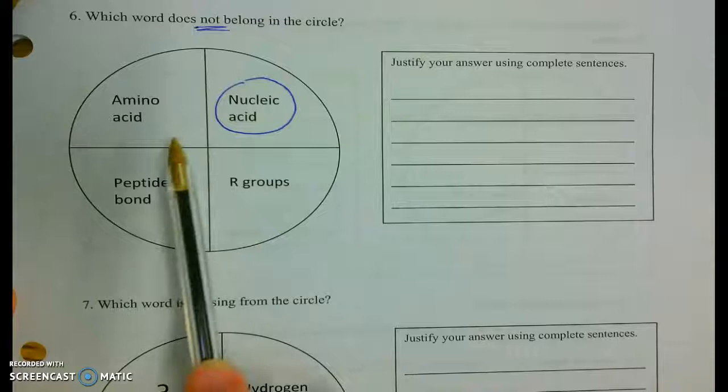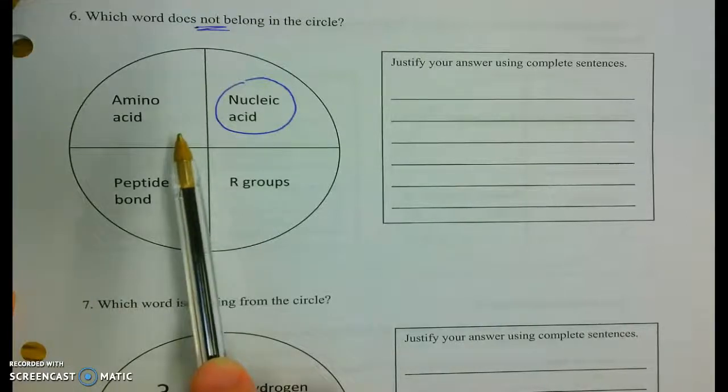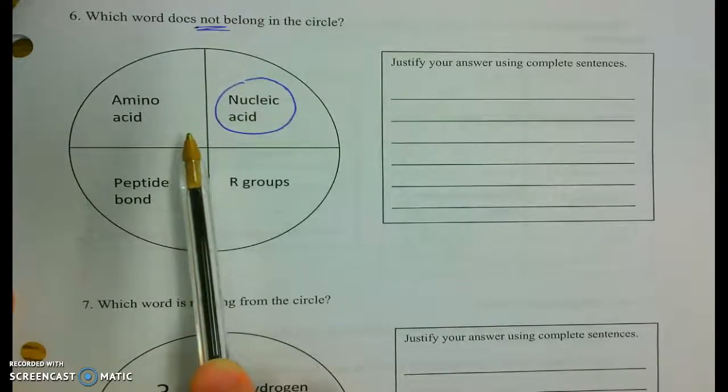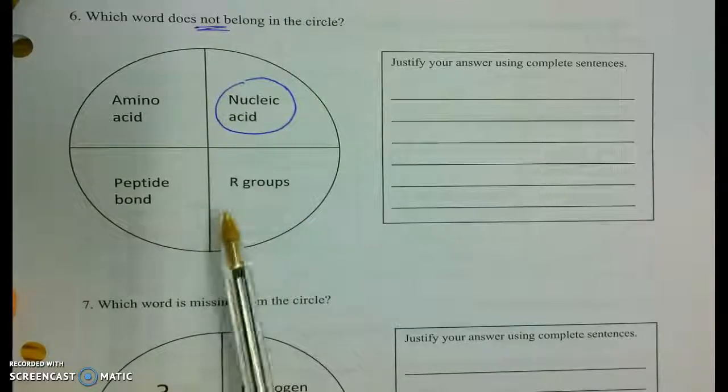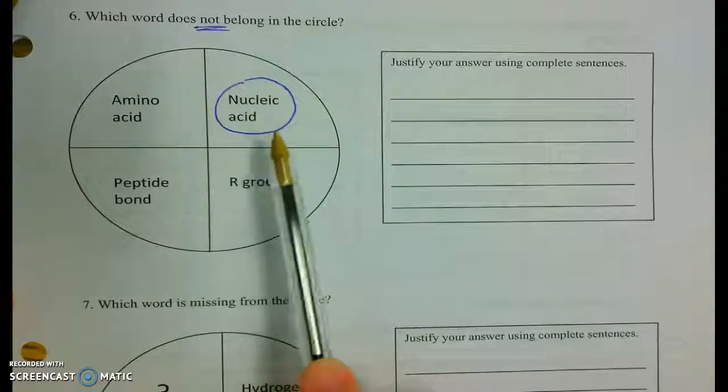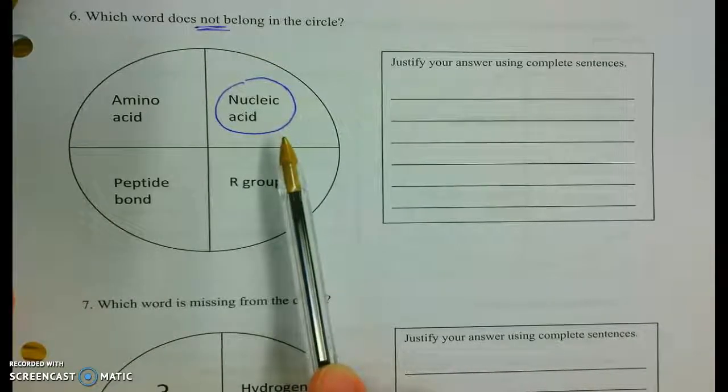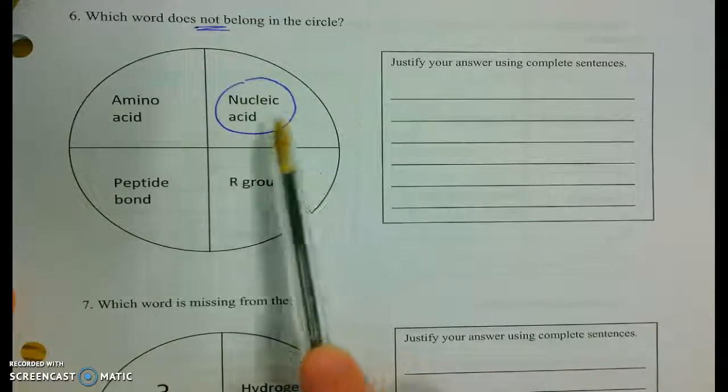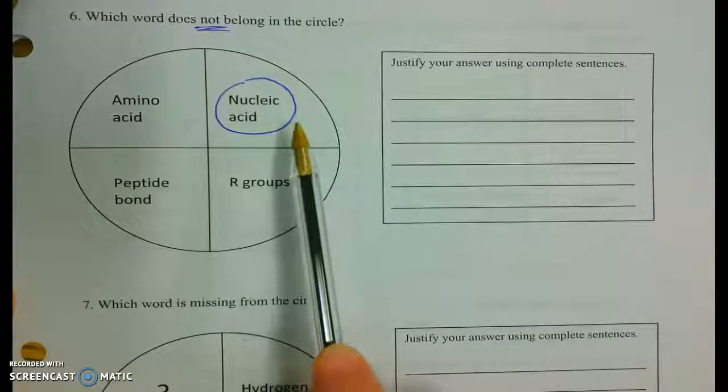Proteins have monomers or subunits called amino acids that are joined together by peptide bonds. And a key part of the amino acid is the amino group, the carboxyl group, and the variable R group, or that side chain. Nucleic acids, on the other hand, are a completely different type of organic molecule. So, these are going to be our genetic information, like DNA and RNA.